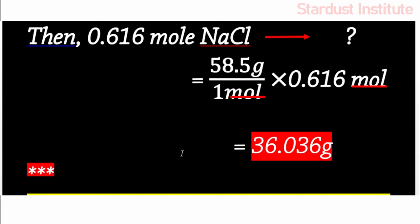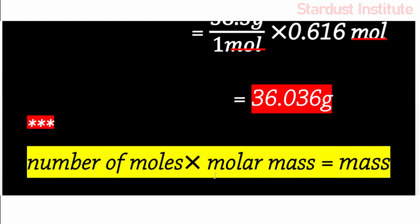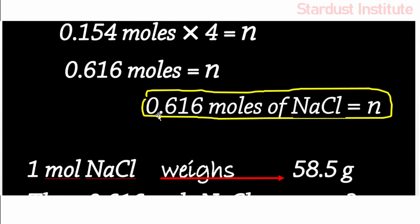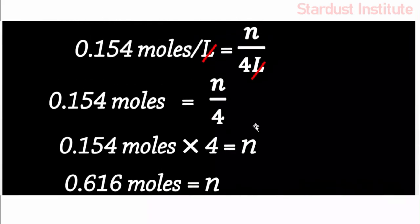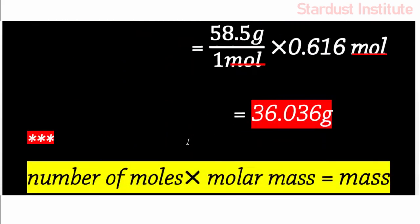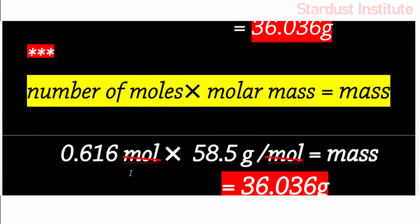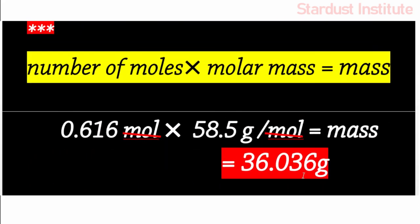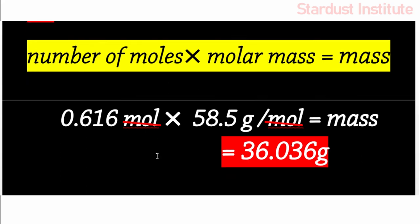There is another way to find the answer: number of moles times molar mass equals mass. We found 0.616 moles, and the molar mass of sodium chloride is 58.5 grams per mole. Substituting: 0.616 moles times 58.5 grams per mole equals mass. Moles cancel out, giving 36.036 grams. Thank you very much for watching, please subscribe to our channel. God bless you.